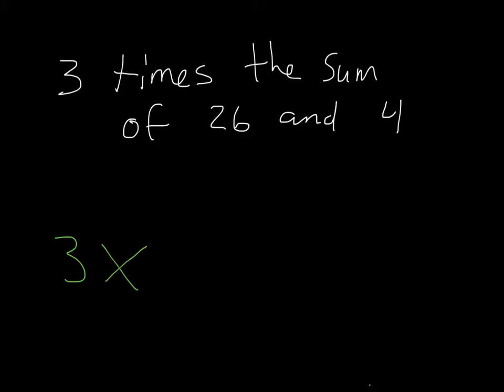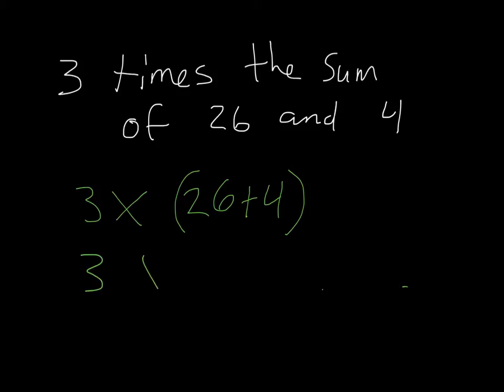Then it says the sum of 26 and 4. Remember that sum means we're adding. So we have 26 plus 4. But remember, this is three times the sum. So we've already found out the value of 26 and 4, so I will be putting that inside parentheses. I'm then able to solve it. Three times 26 plus 4 is 30. Three times 30 is 90.